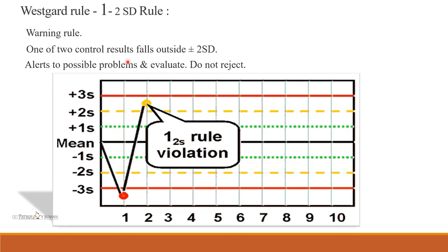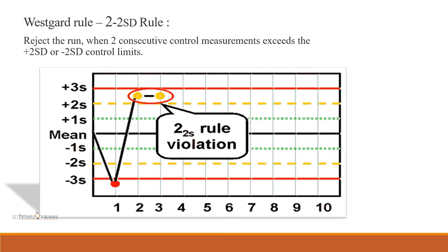The 1-2SD rule: one sample goes beyond plus 2 SD or minus 2 SD. You do not reject this run — it alerts to possible problems; we evaluate and correct the process. The 2-2SD rule: if two consecutive samples go outside 2 SD, then you must reject the run.